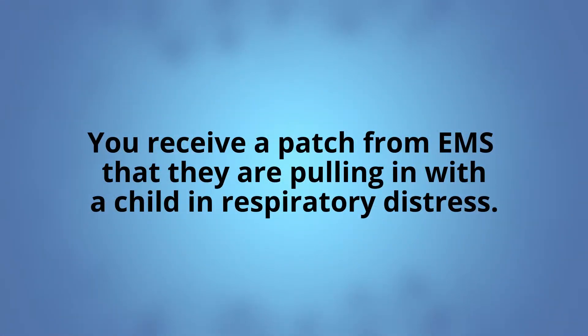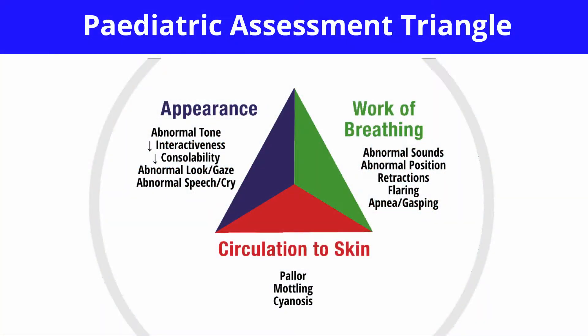The first thing that you want to do is look at your pediatric assessment triangle for your initial impression, to determine how much help this child requires and the level of support that may be needed. Your pediatric assessment triangle includes appearance, your patient's work of breathing, and their circulation to their skin.